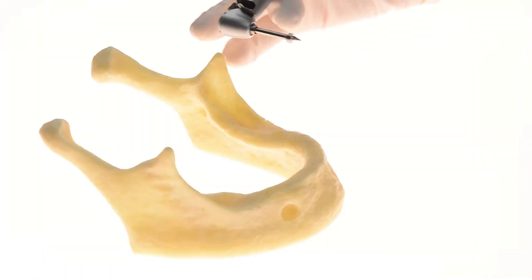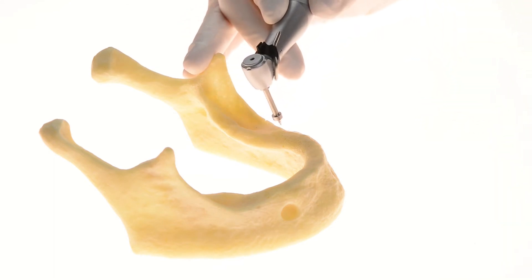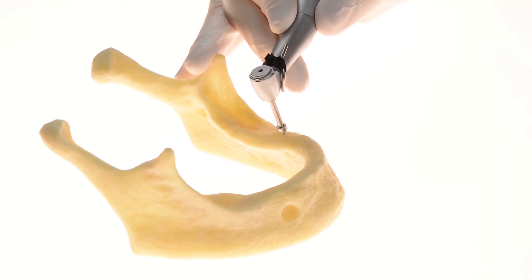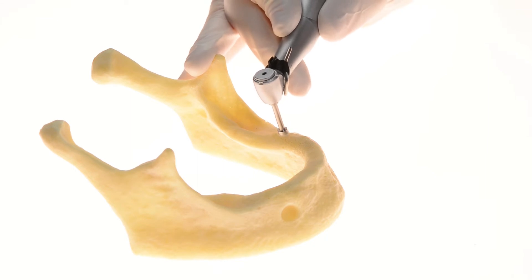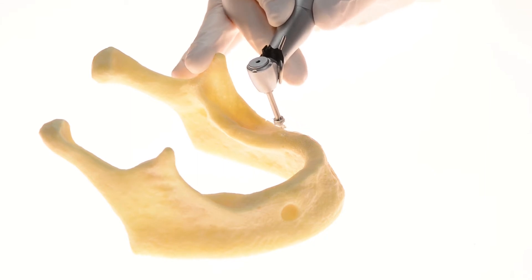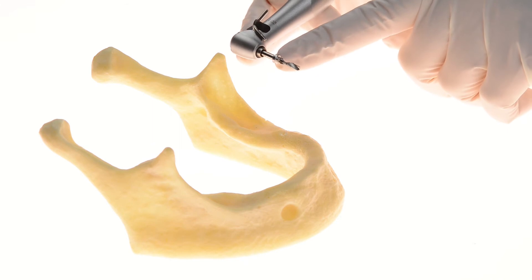The marking drill is used to start off the drilling sequence in an accurate manner. Its ring has a 4mm diameter indicating the final implant position. After marking the correct drilling spot, we continue with the pilot drill.